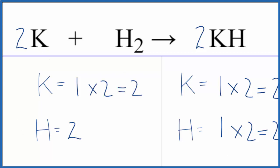Now everything's the same on both sides. This equation is balanced. This is Dr. B with the balanced equation for K plus H2 gives KH. Potassium plus hydrogen gas gives us potassium hydride. Thanks for watching.